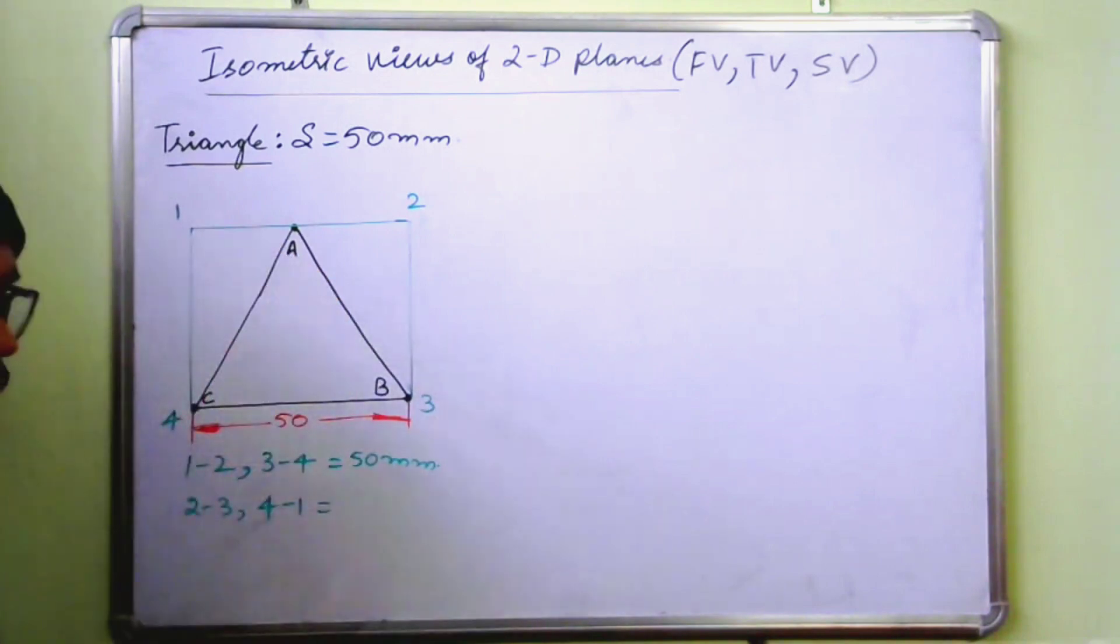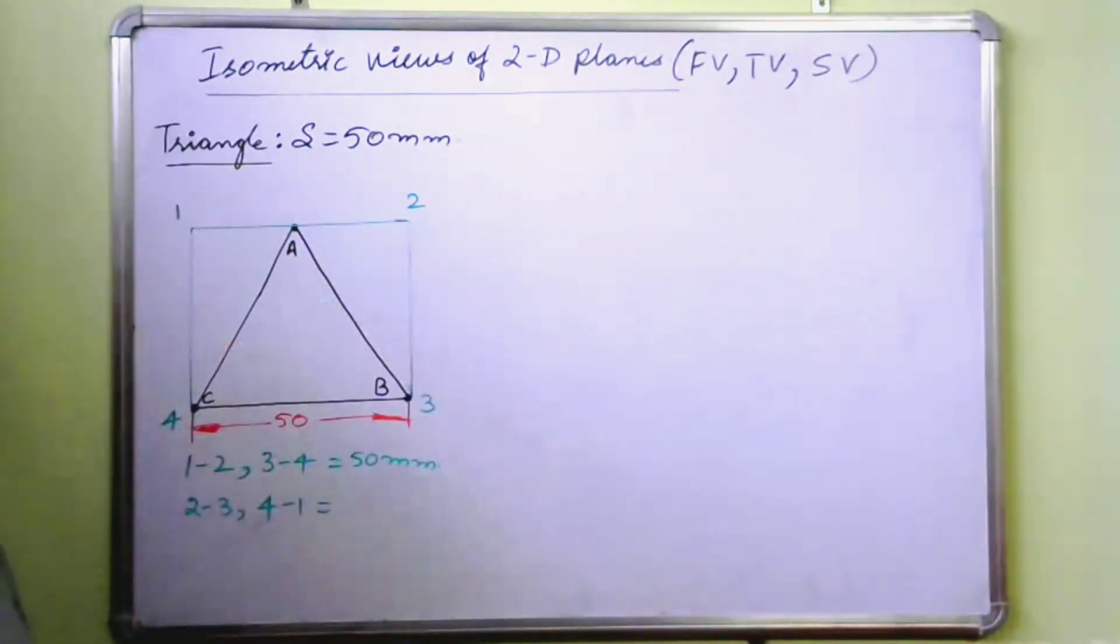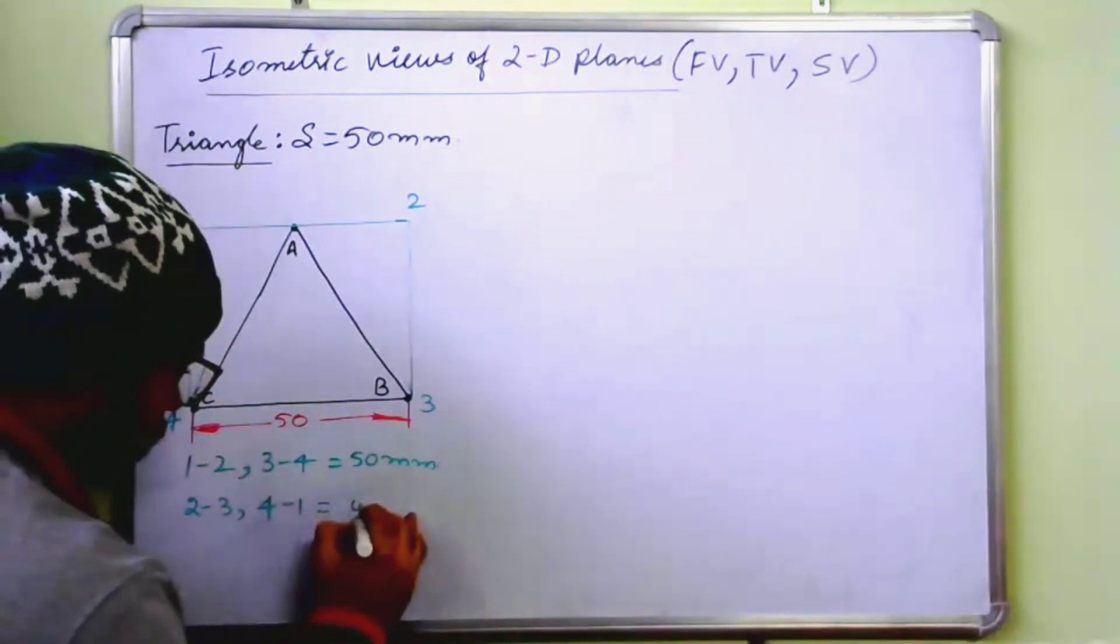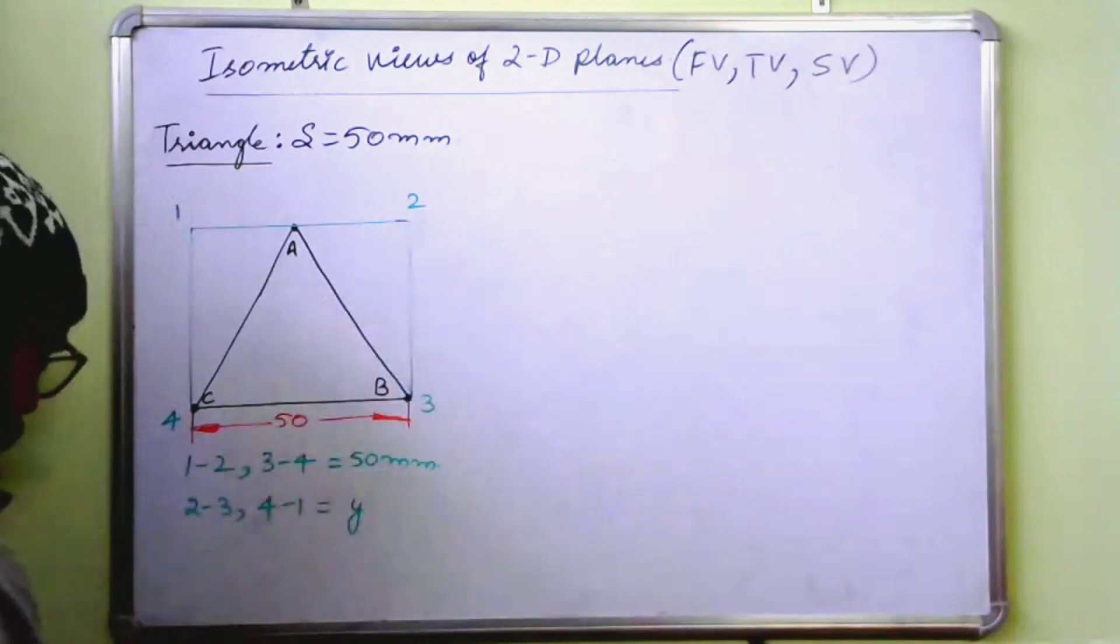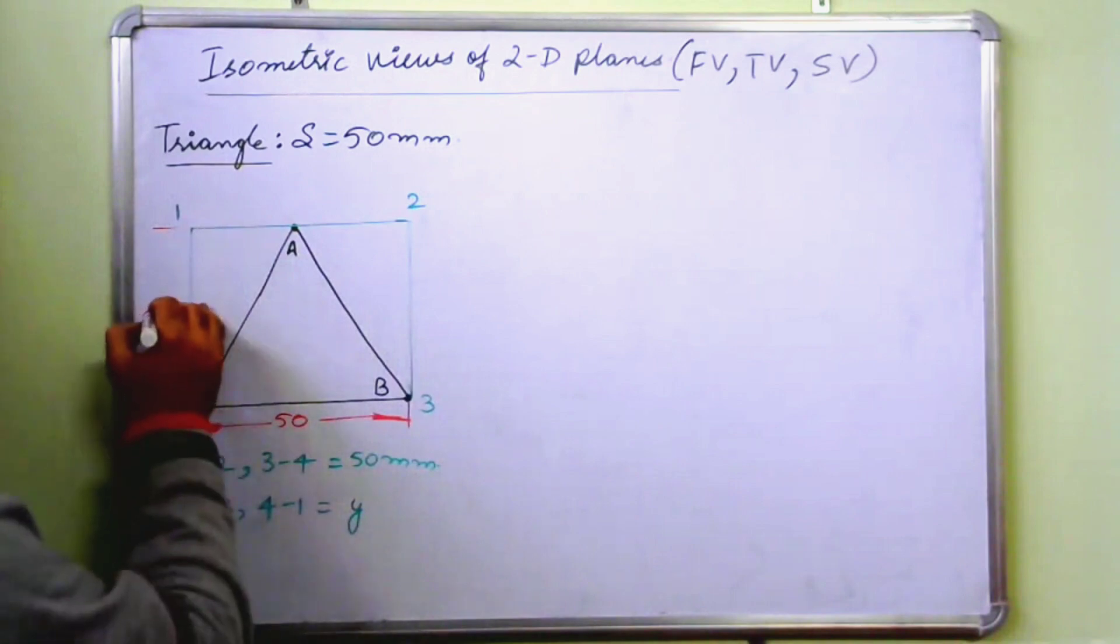Now, we will get this after measuring it. We do not know what is the length or let us say it is the height of the triangle. So we have not just found out. So let us say it is y, equal to y. Let us say this is equal to y.